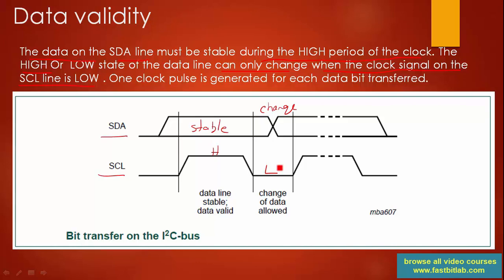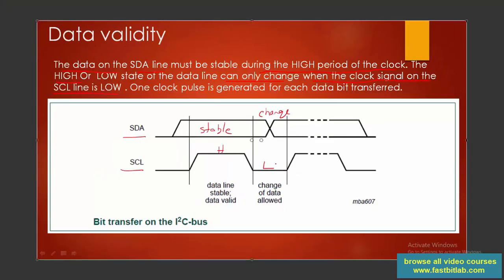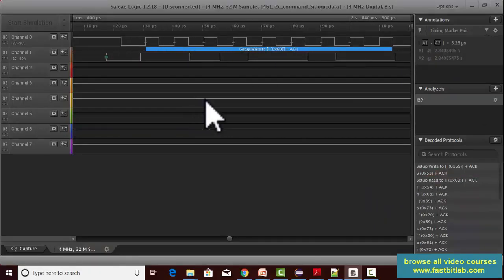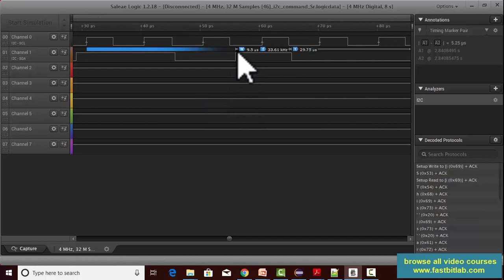You should remember that data change will happen only when the clock is low. If you take a look at this trace once again, you can see that this is a data transition.